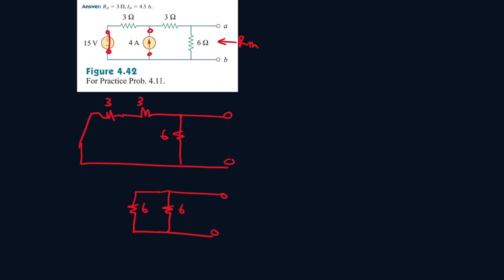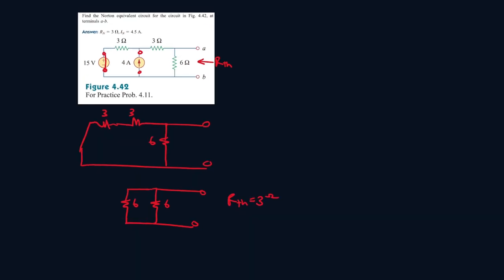like something like that. And then if we combine those two, we get RTH to be equal to 3 ohms. Okay, now R Norton is equal to RTH, so R Norton is 3 ohms.